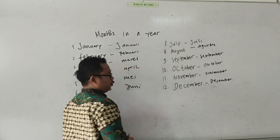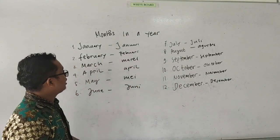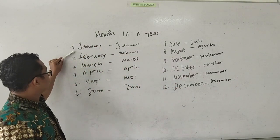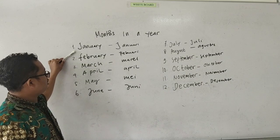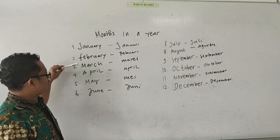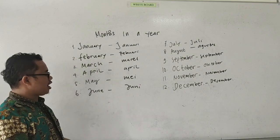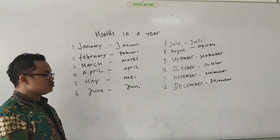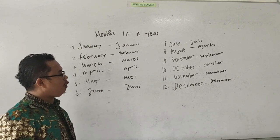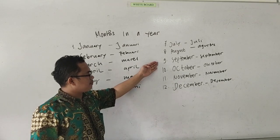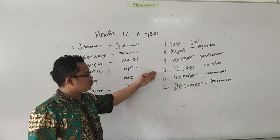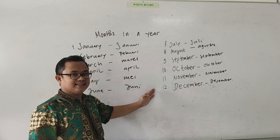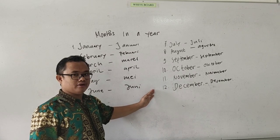So, ada 12 bulan dalam satu tahun: January, February, March, April, May, June, July, August, September, Oktober, November, Desember. Okay, baik.